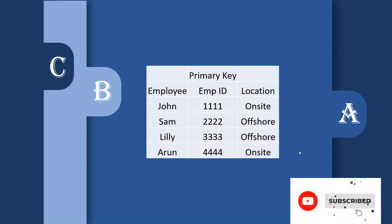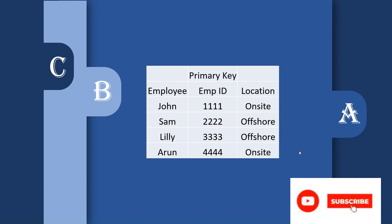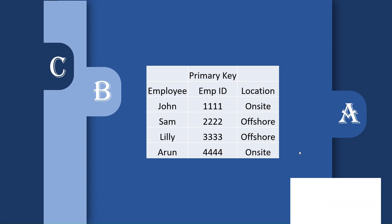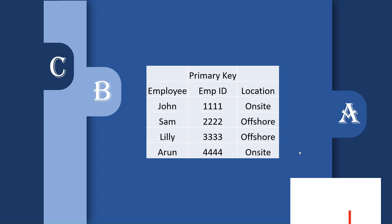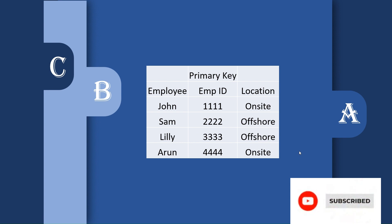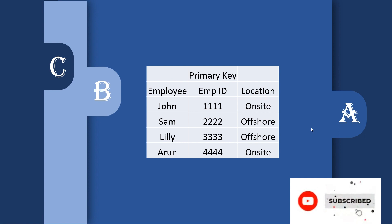A junction object in Salesforce is mainly used to perform a many-to-many relationship. Many-to-many relationship means: if we have two objects in Salesforce and we want to perform a many-to-many relationship between them, a junction object will be used.